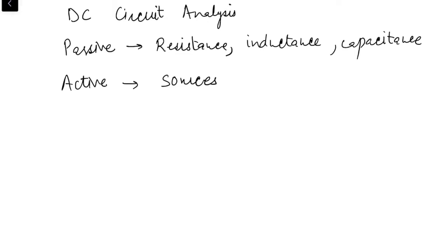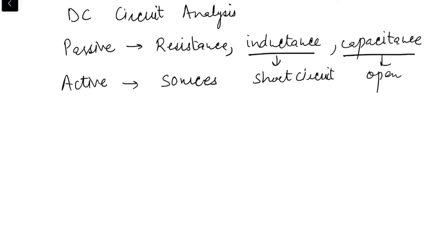Under steady state analysis, inductance and capacitance behave as short circuit and open circuit respectively. Since the frequency of DC is 0, inductive reactance becomes 0 — meaning short circuit — and capacitive reactance becomes infinite — meaning open circuit. So under steady state analysis, our circuit will consist of resistance and different types of sources.